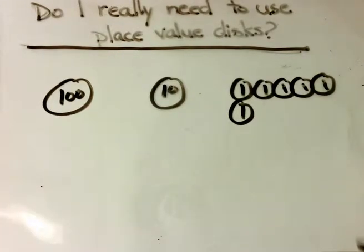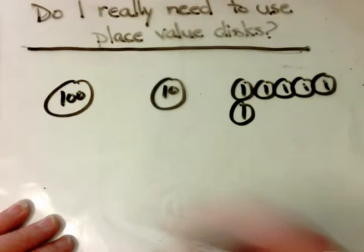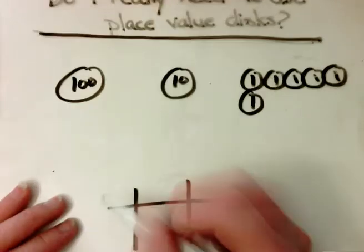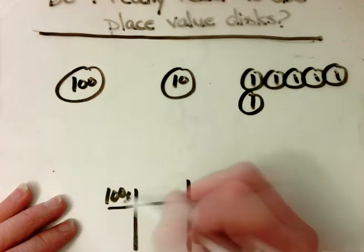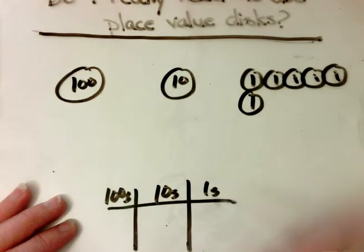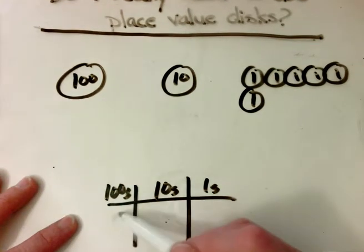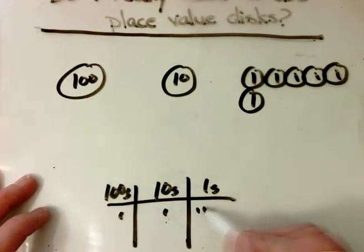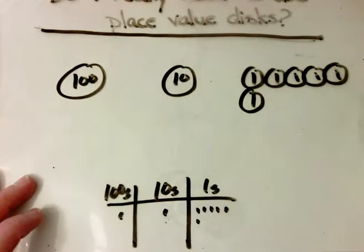Later, as students move towards what's called the chip model, they'll actually just draw dots inside a place value chart that will show hundreds, tens, and ones. And they could represent the same number: 100, 10, and six ones.